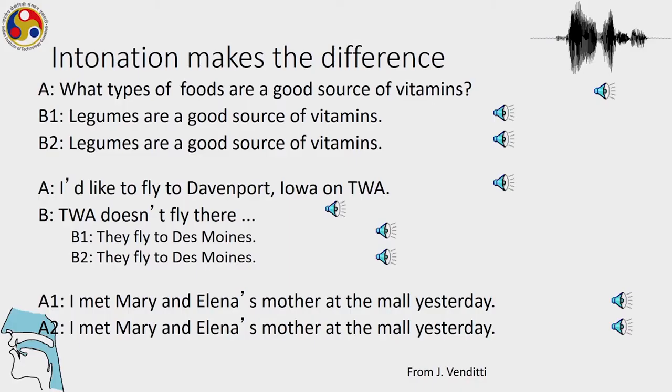We have been talking about intonation — how intonation is about the sentence-level fundamental frequency which changes at the sentence level and conveys a lot about the structure of sentences. A lot about communication is conveyed through intonation. Intonation makes a great difference in how we say one sentence and how we differentiate one sentence from another. Let's have a look at some examples.